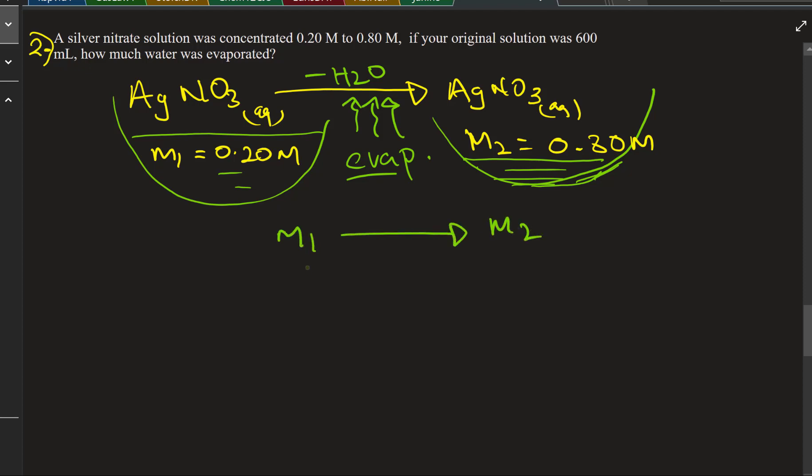How much? 0.8 divided by 0.2, which is 4 times. So the molarity goes 4 times higher. According to my previous illustration, that means your volume should be decreased.